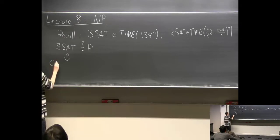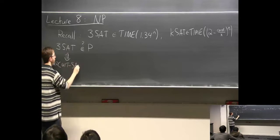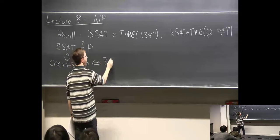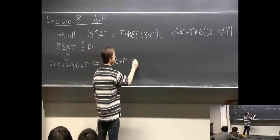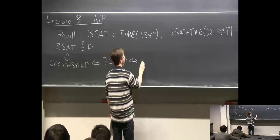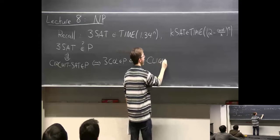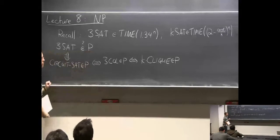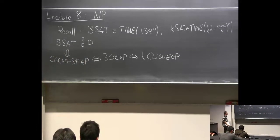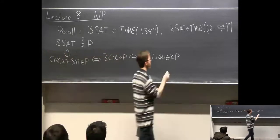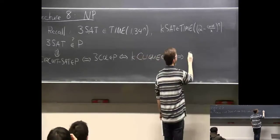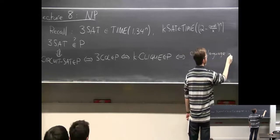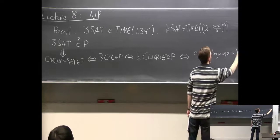3SAT is in P if and only if circuit SAT is in P, which is if and only if three colorability is in P — you show on homework how to do that in 2^n time, but polynomial time is a lot harder — if and only if the k-clique problem is in P, and if and only if literally thousands of interesting problems that we don't know to be in P are in P. In fact, it's if and only if every language in this class called NP is in P.